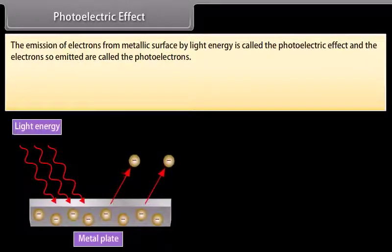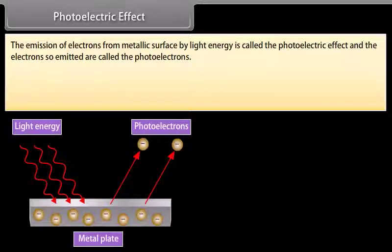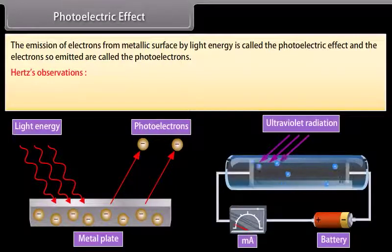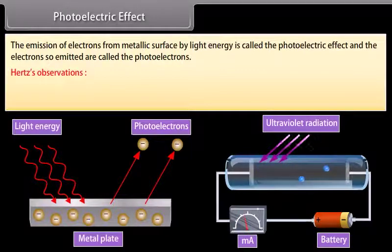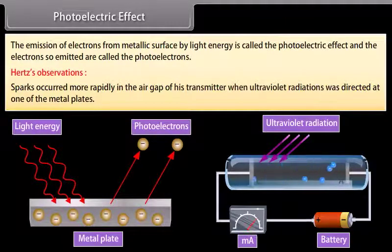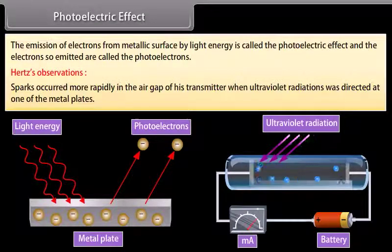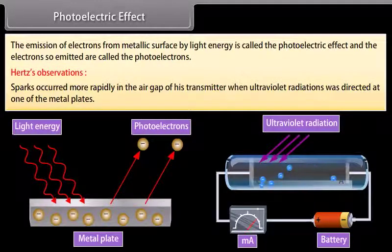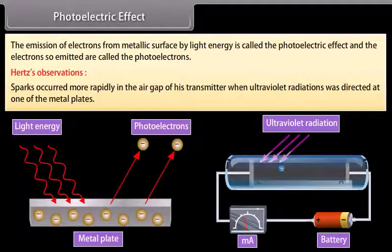The emission of electrons from a metallic surface by light energy is called the photoelectric effect. The electrons so emitted are called photoelectrons. Hertz observed that sparks occurred more rapidly in the air gap of his transmitter when ultraviolet radiation was directed at one of the metal plates. Other scientists explained that this was due to emission of electrons from the metal plate due to incidence of high-frequency light — this is the photoelectric effect.